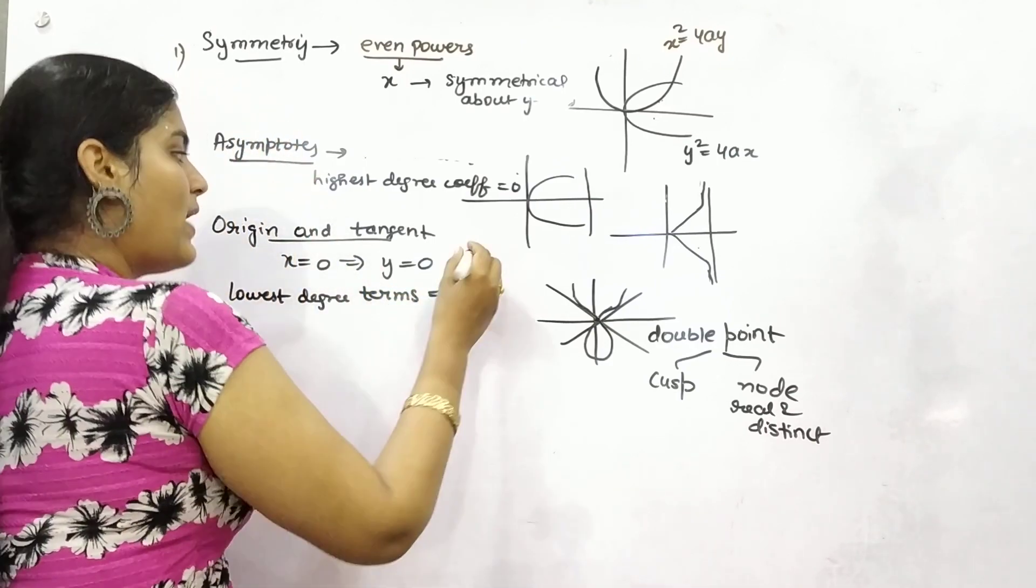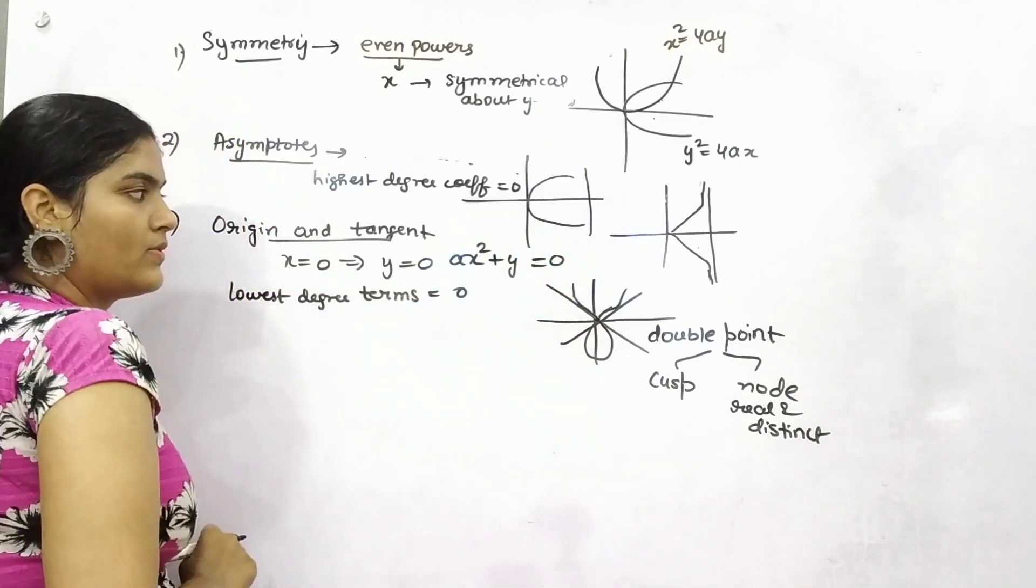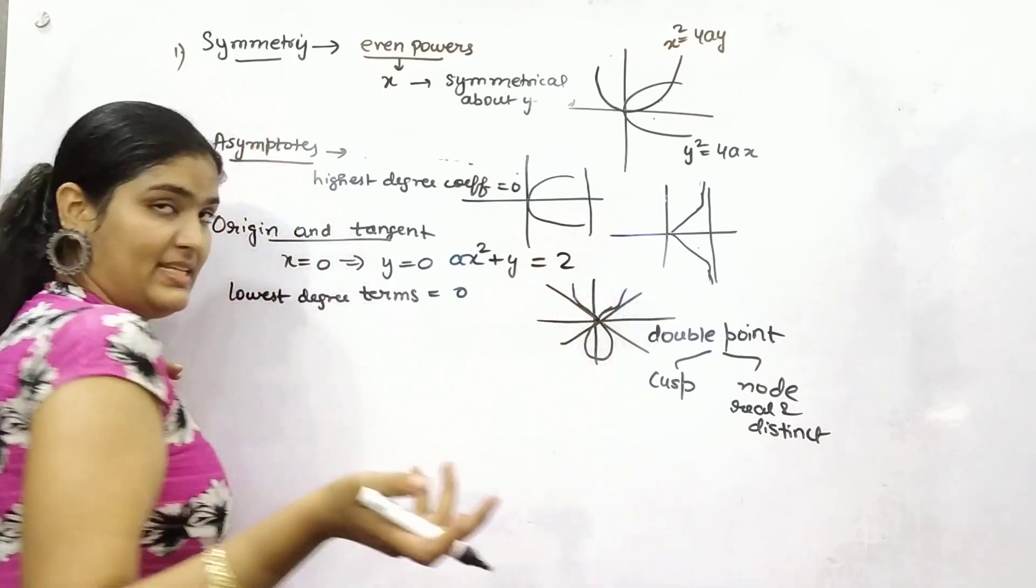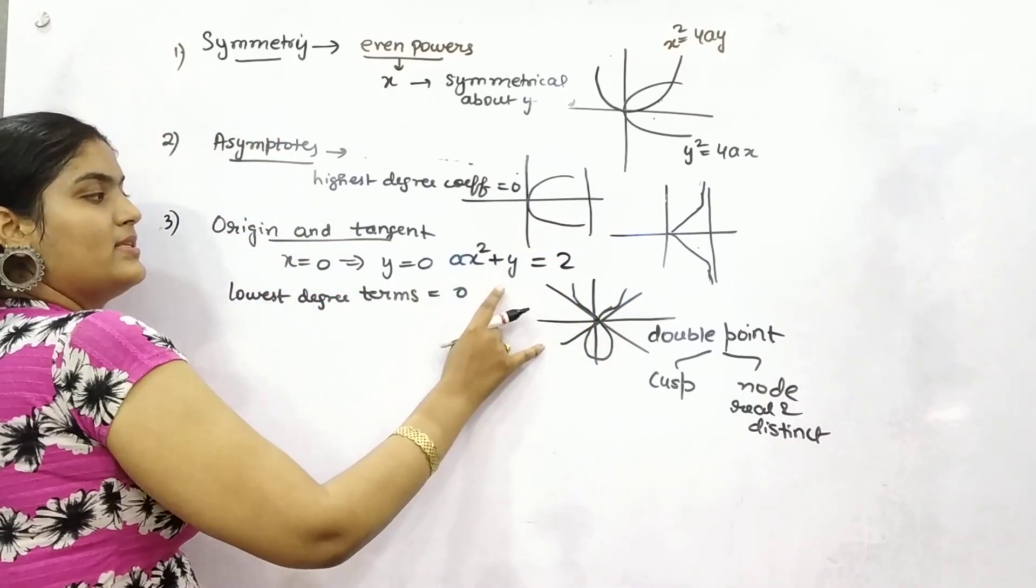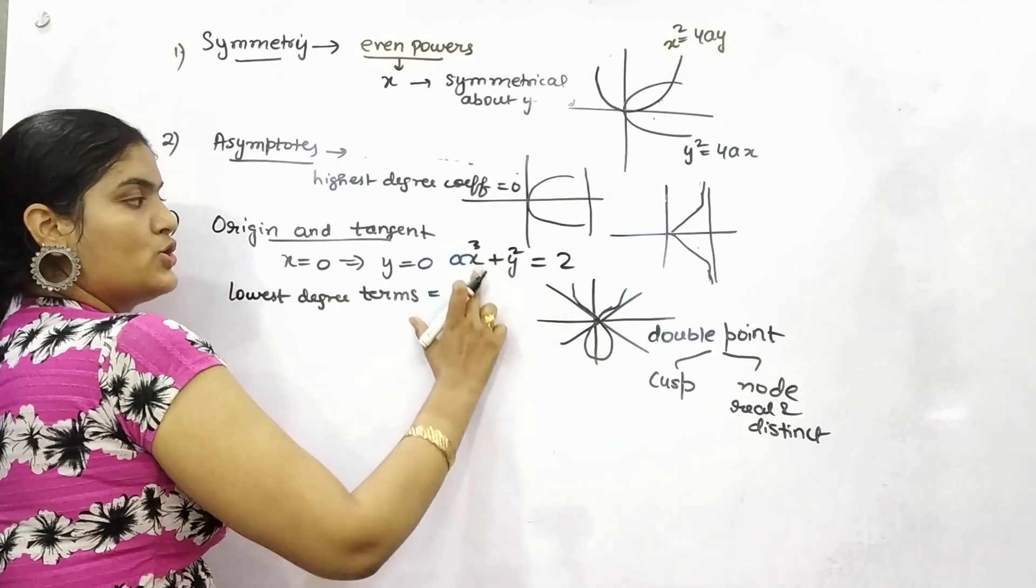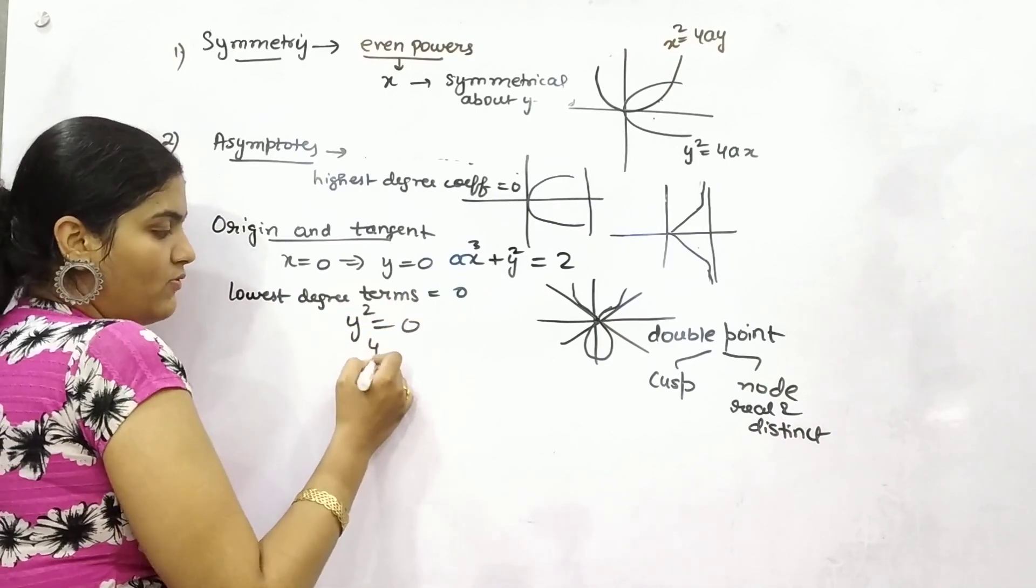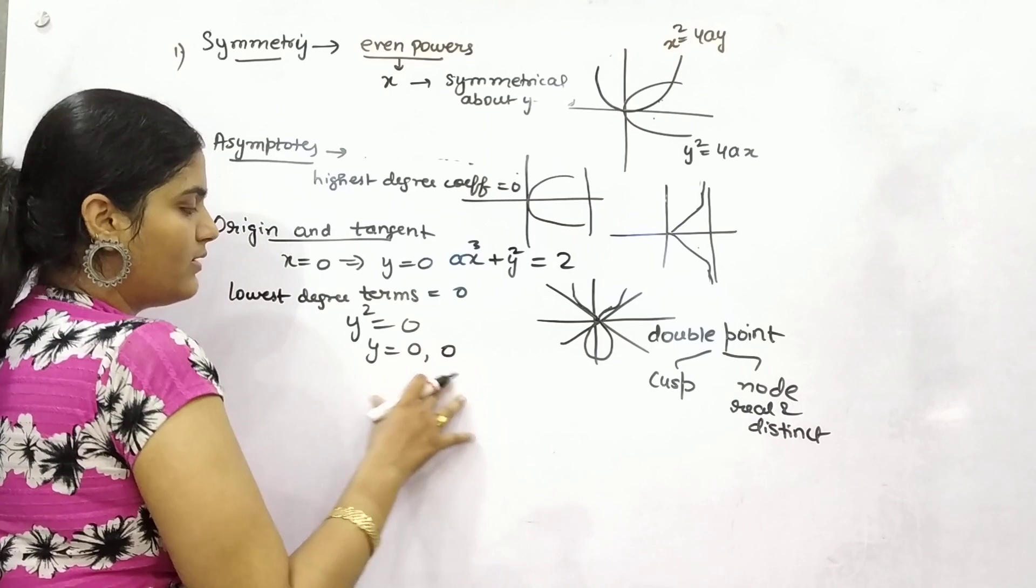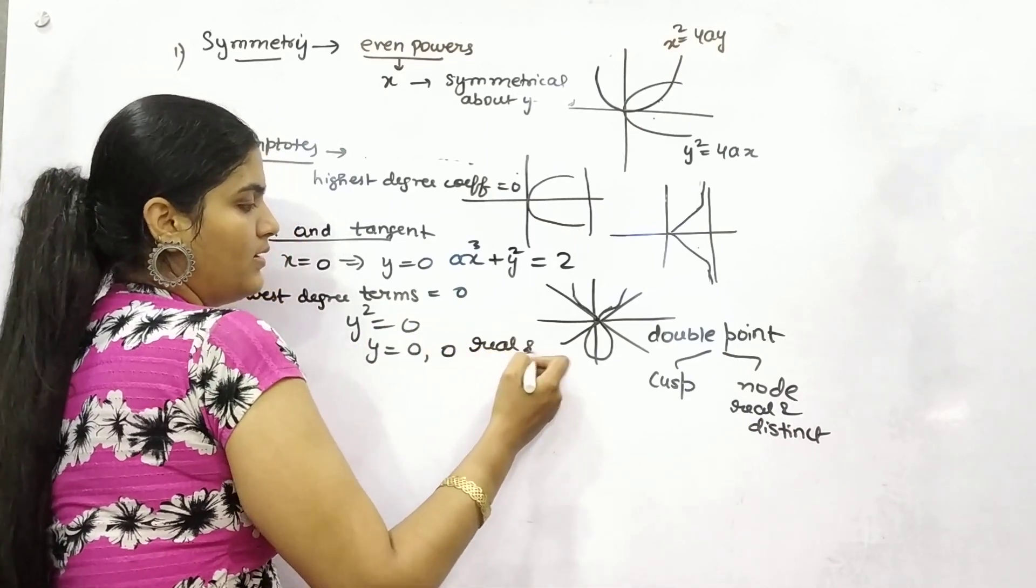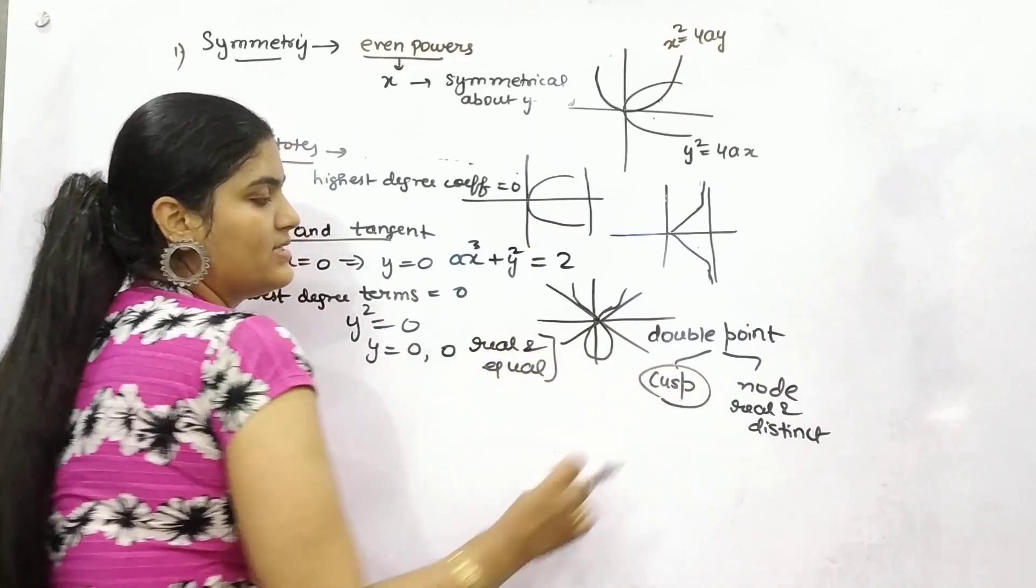Let's say you have ax² + y² = 2. Your lowest degree term is y². Set it to 0, so you will get both values of y as 0. These are real but equal. That case will be considered as cusp.